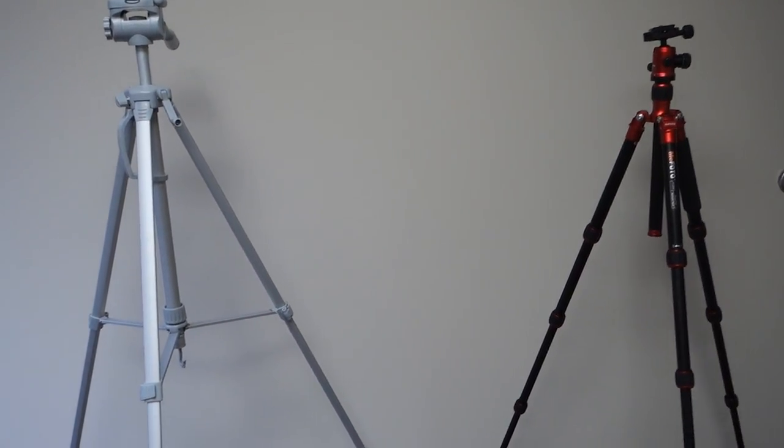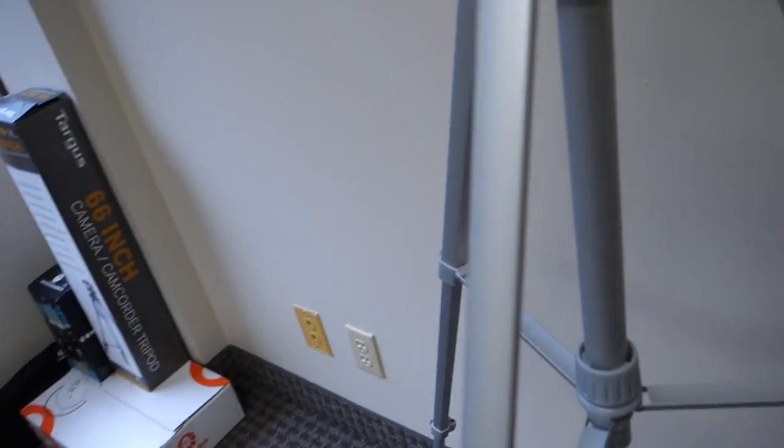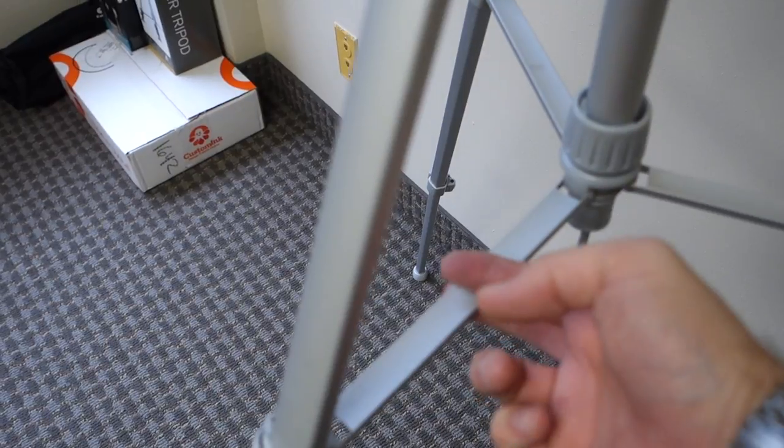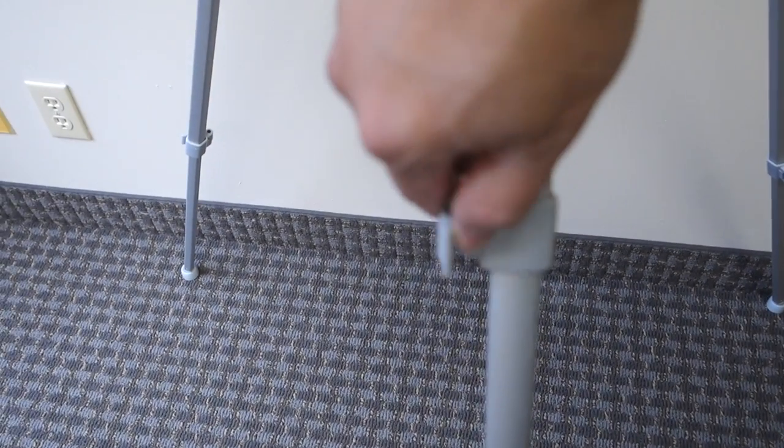The final thing is that the Targus requires, because it's kind of this plastic flimsy, requires stabilizers, whereas the MeFoto does not because it's made of the higher quality metal. Also, these are little clasps.